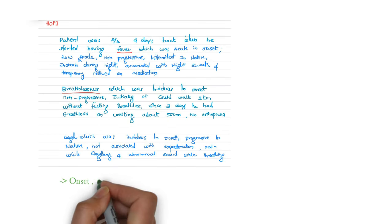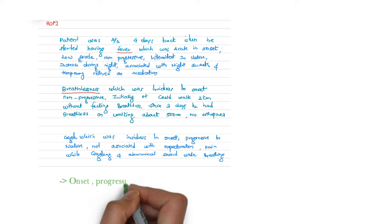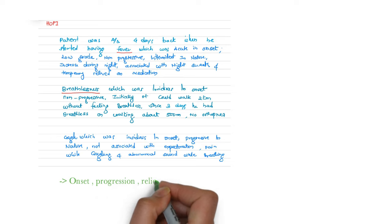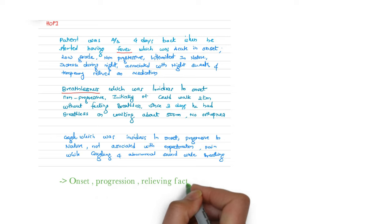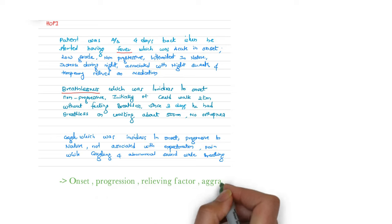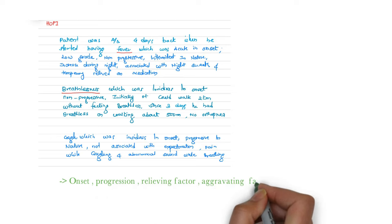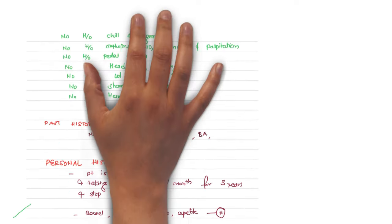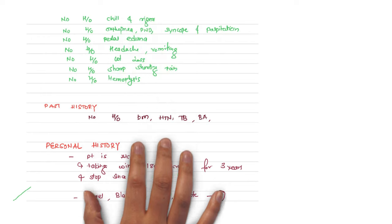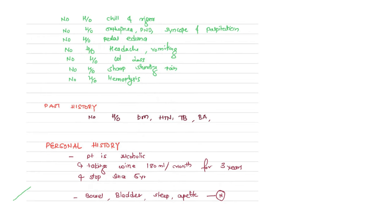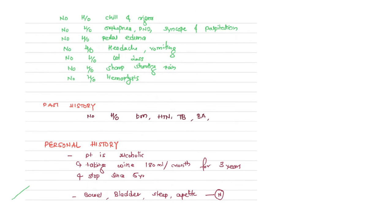For all three complaints, always ask: what is the onset, is it progressive or not, any relieving factors, and any aggravating factors. This is the HoPI approach.